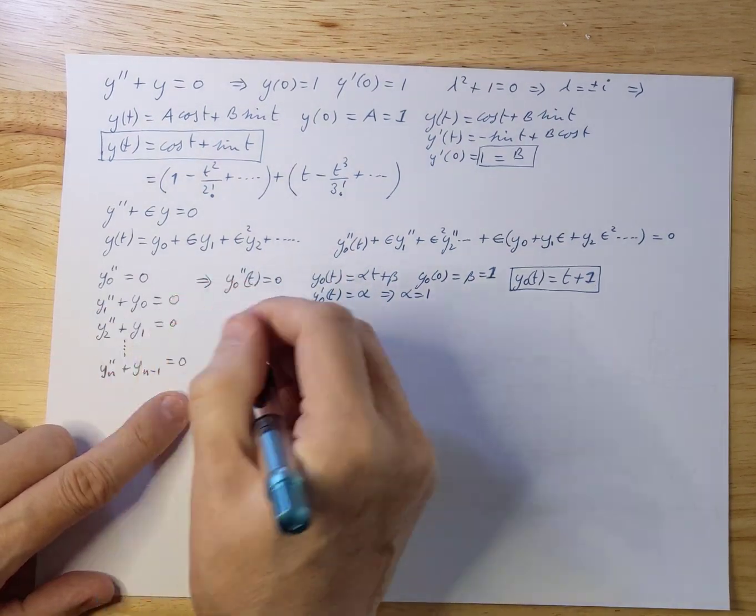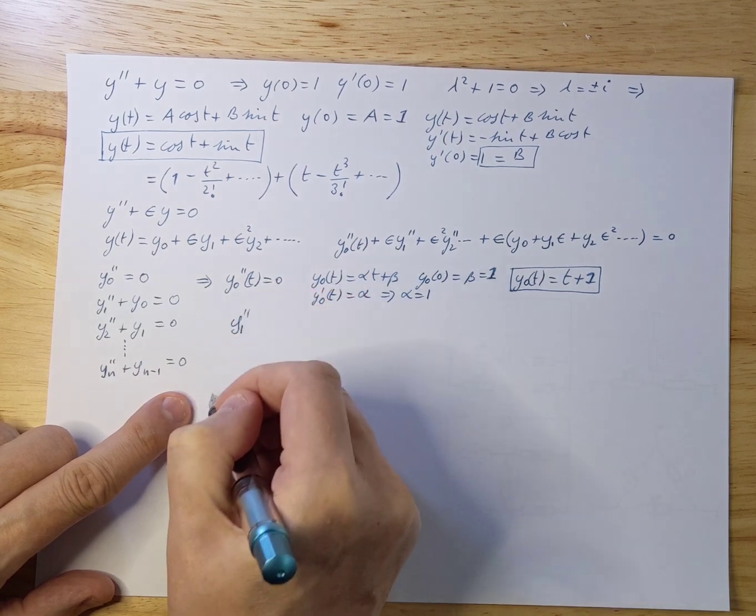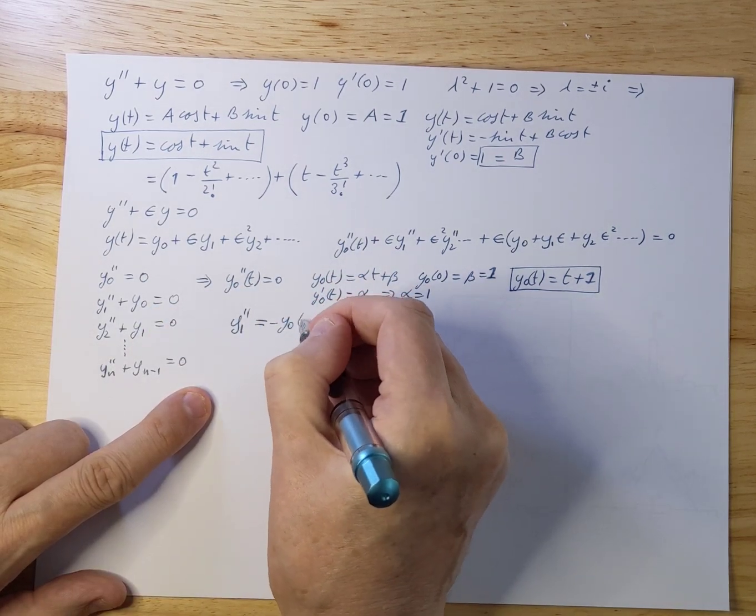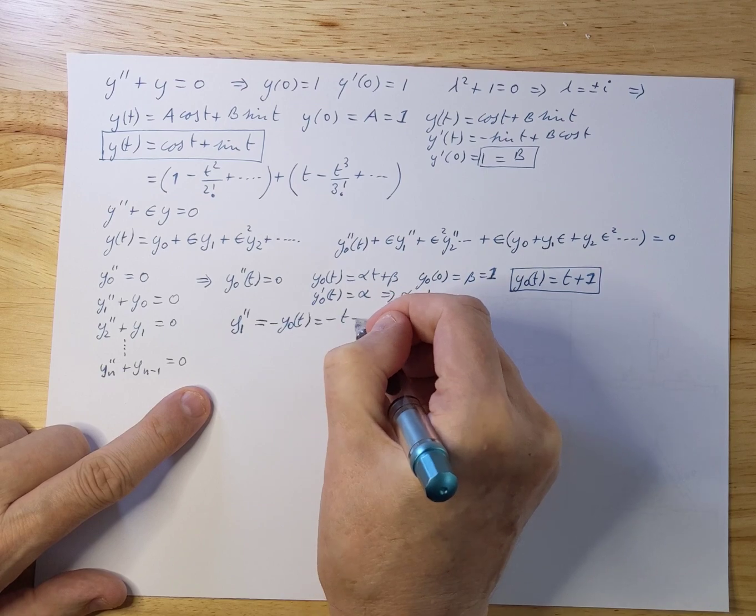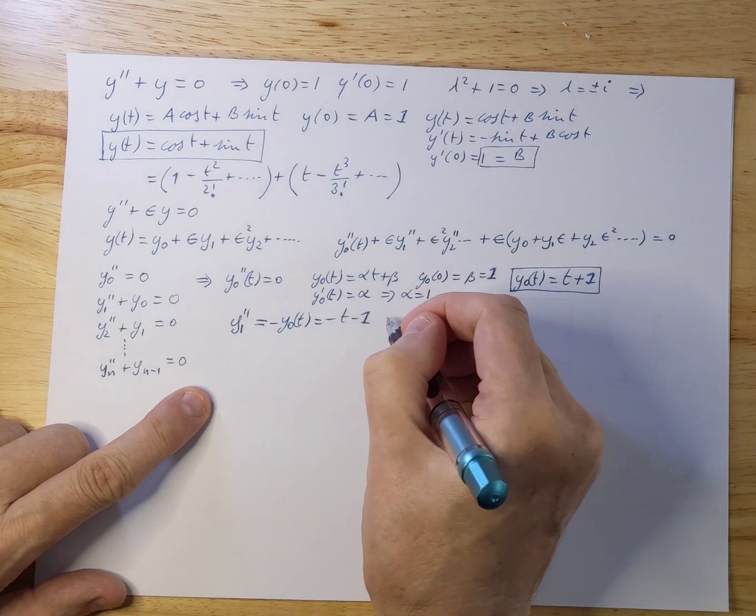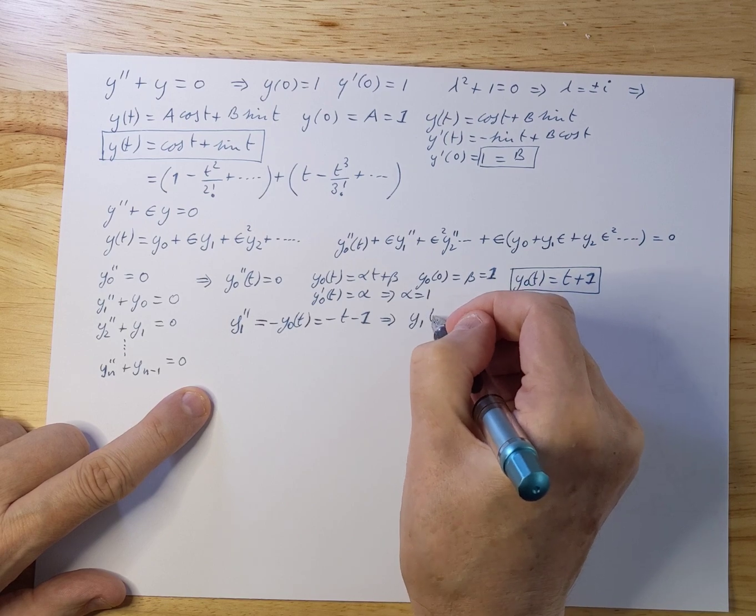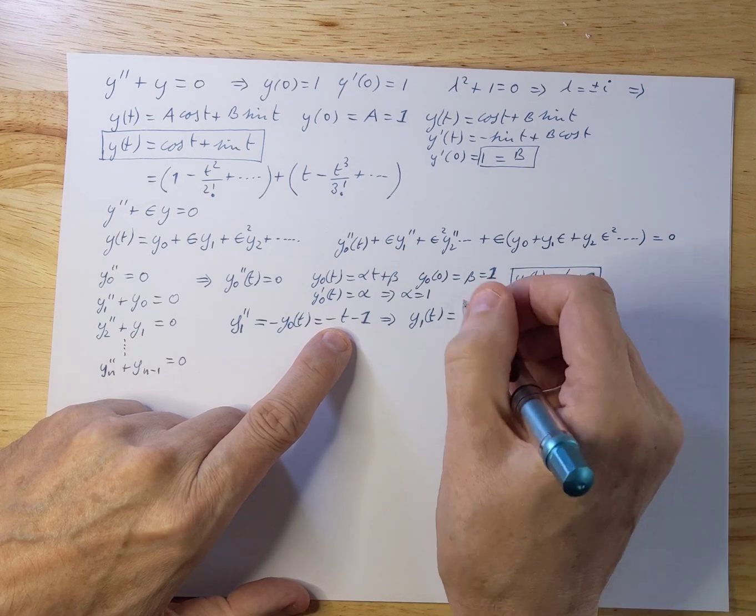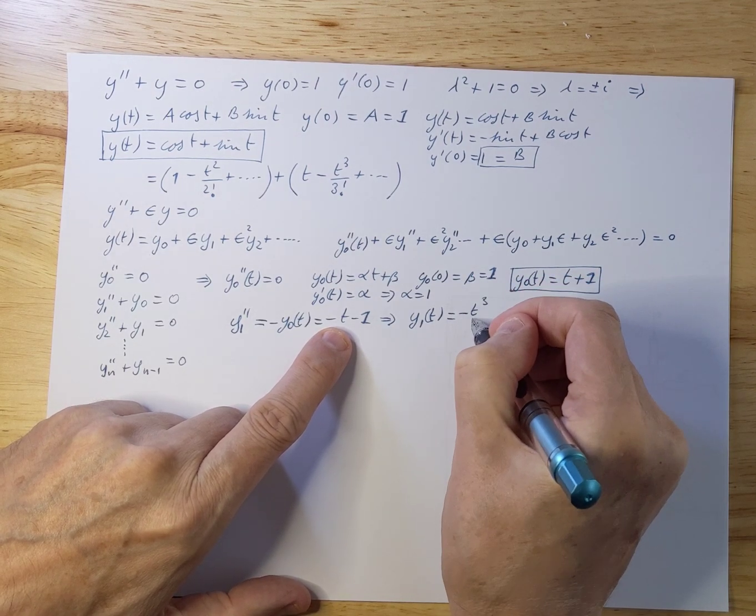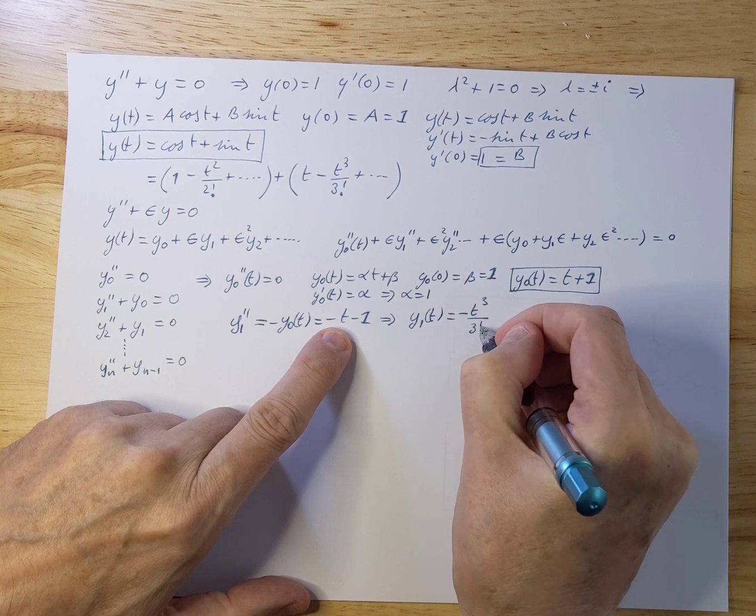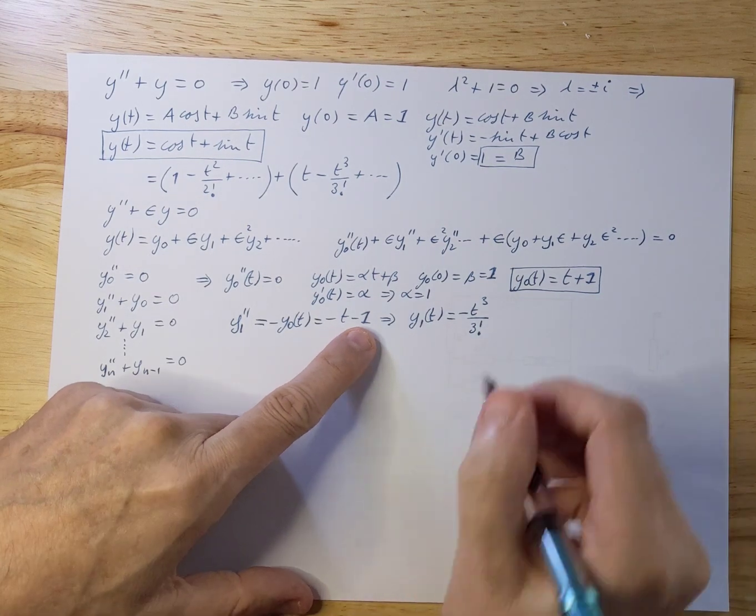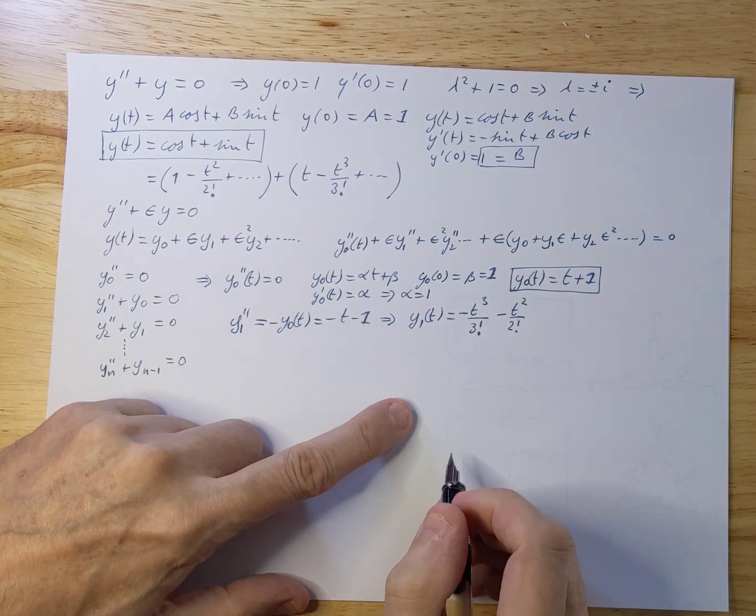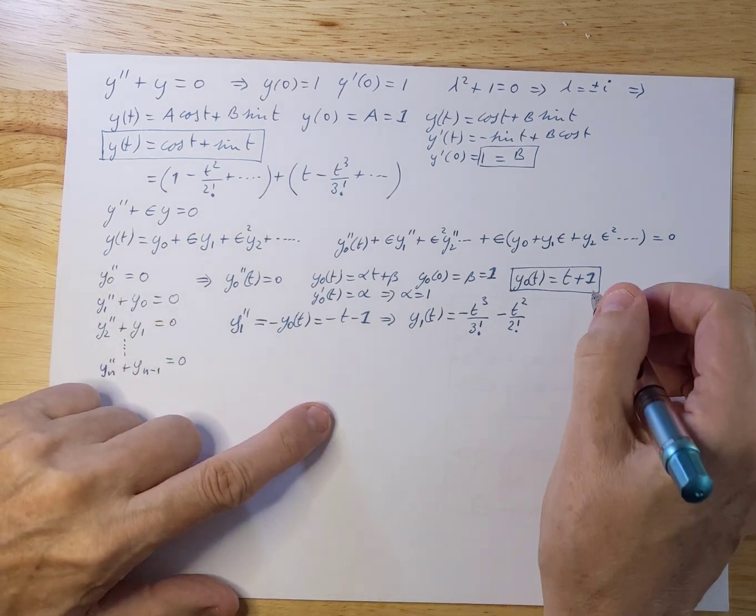Let's try to calculate y₁ double. y₁ double differentiated equals minus y₀(t) equals minus t minus 1. Now let's integrate that twice. And we get y₁(t). You integrated this the first time, you get t squared over 2. You do it again, you get t to the third. So it's minus t to the third divided by 3 factorial. And if you take the next term, it's minus t squared over 2 factorial.